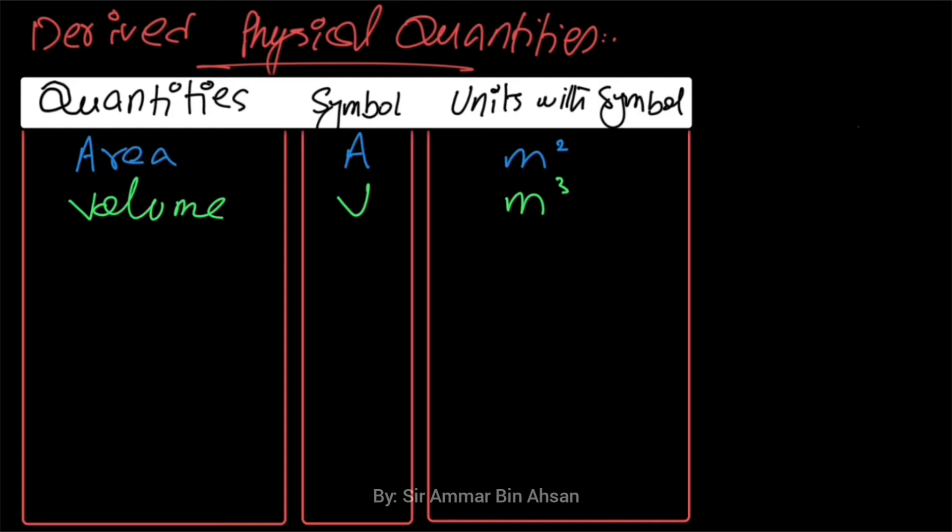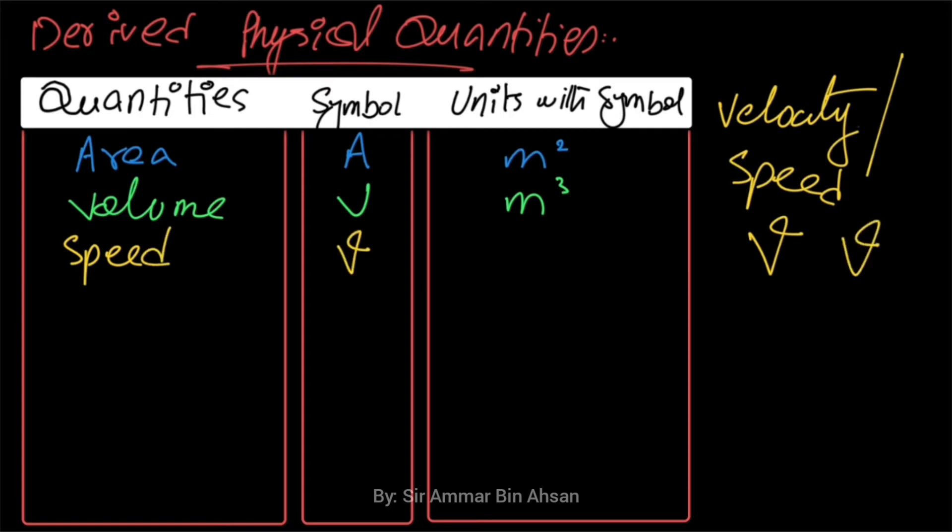Now you can see some other known quantities. A new quantity is called Velocity, also called Speed. The symbol for velocity is v, small v. Speed or velocity is also a derived quantity.